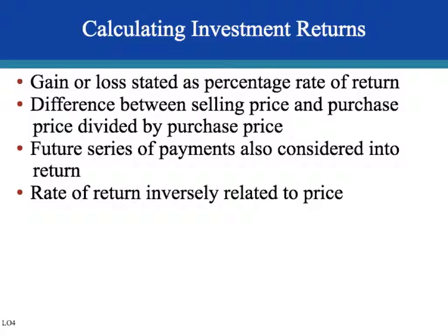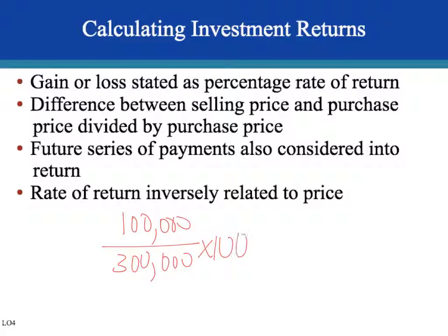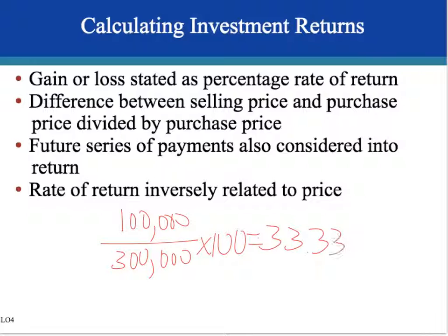Investment returns are stated as a percentage — if it's positive, it's a gain; if it's negative, it's a loss. You can calculate it by dividing the gain or loss by the purchase price. For example, if you buy a house for $300,000 and sell it for $400,000, your gain is $100,000 divided by $300,000, giving you a gain of 33 and a third percent.